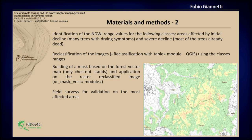We then reclassified the images using some models in QGIS — the second part of the GIS analysis was done using QGIS. Using this classified range, we reclassified the index images. Then, we built a mask based on the forest vector map that was produced by my institute in past years. We applied this mask only for the chestnut stands, because in the forest map there are different forest typologies.